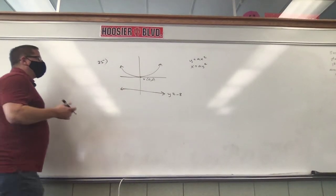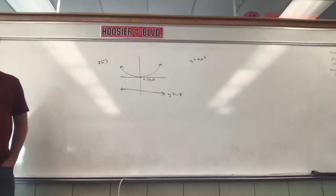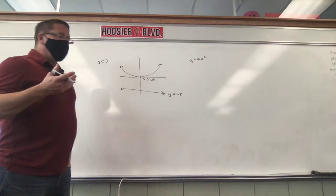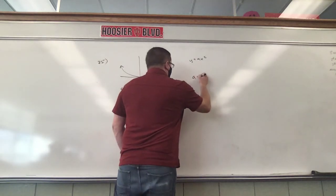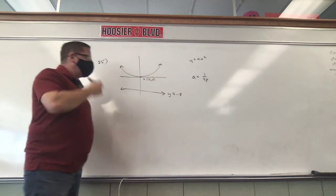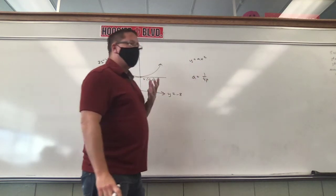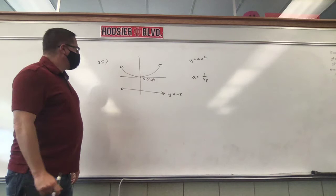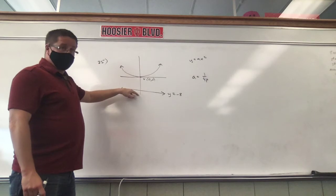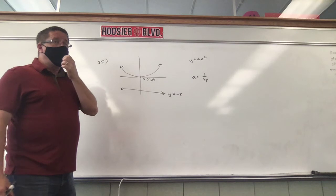It's going to be y equals something x squared, and we should know something about a — it's got to be positive, it's going up. But positive what? We don't know. We've got to find out what a is. We learned yesterday there's a formula: a is 1 over 4p. This is how you calculate what a is. p is the distance from the vertex to the focus, which they didn't give us, or the vertex to the directrix, which they did give us.